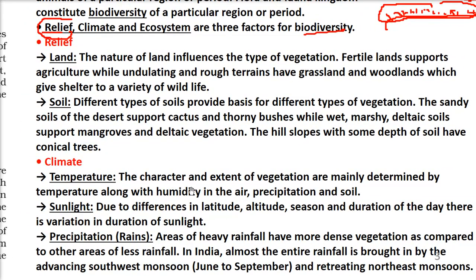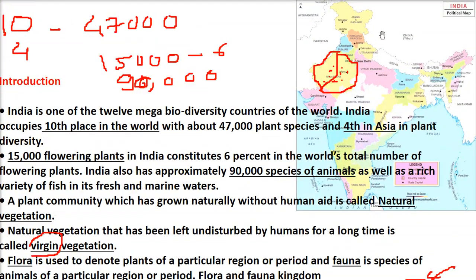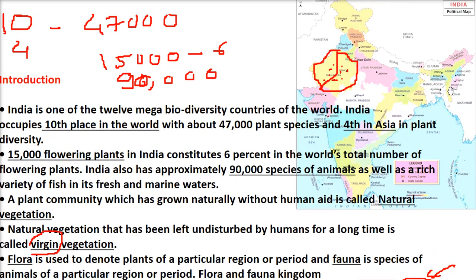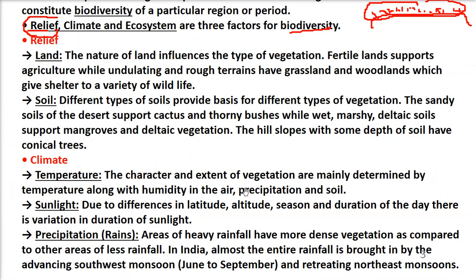If you go to the Himalayan ridge top, it's always snow — you expect no trees, only small grasses or nothing. But in the Western Ghats where there is a lot of rain and moderate temperature, you get different kinds of trees. Temperature determines the character and extent of vegetation.